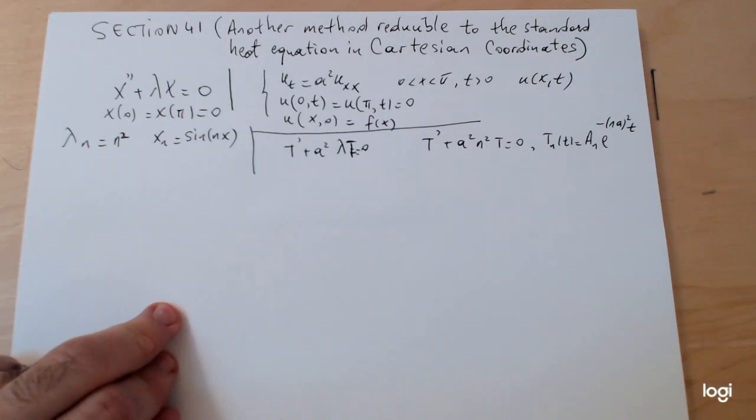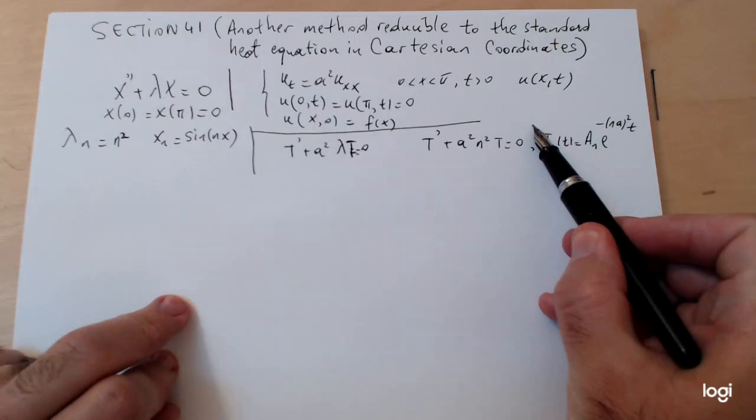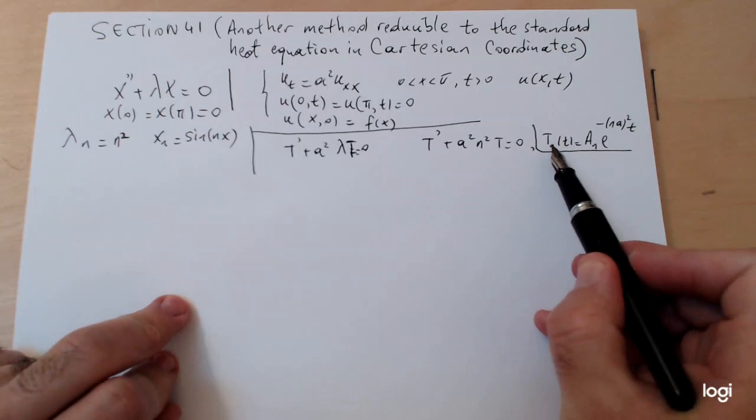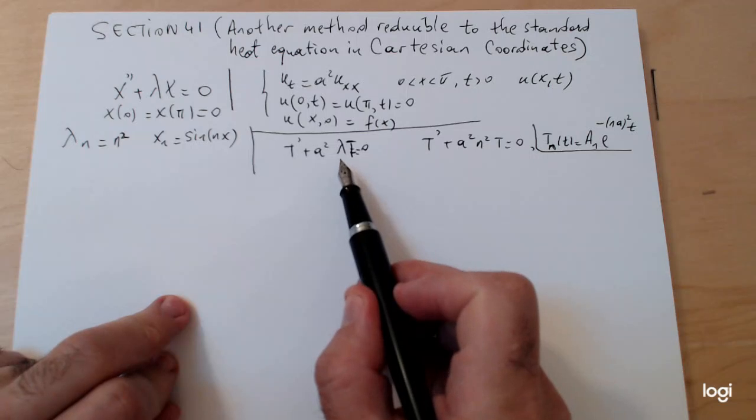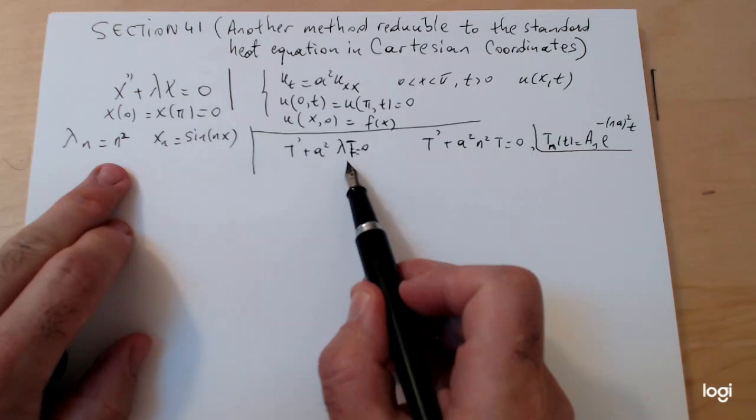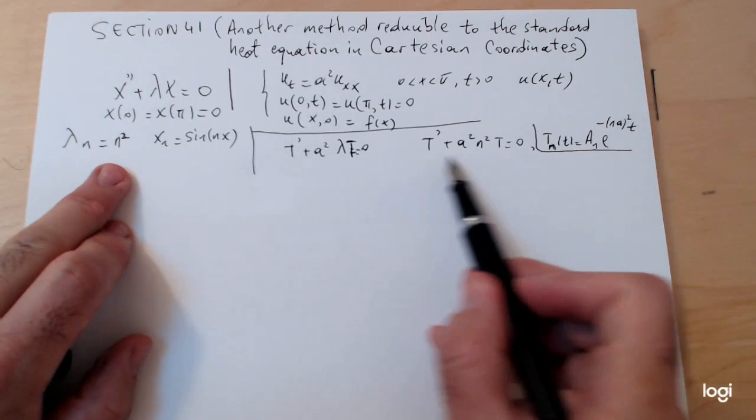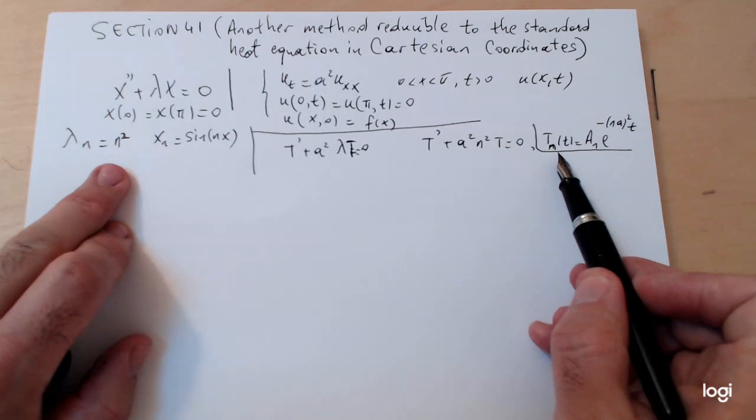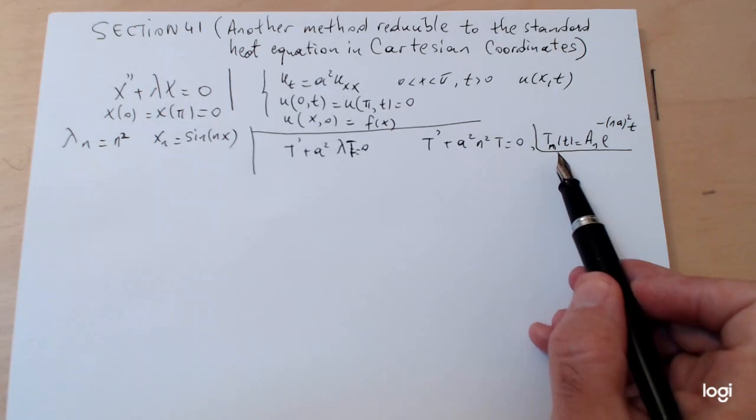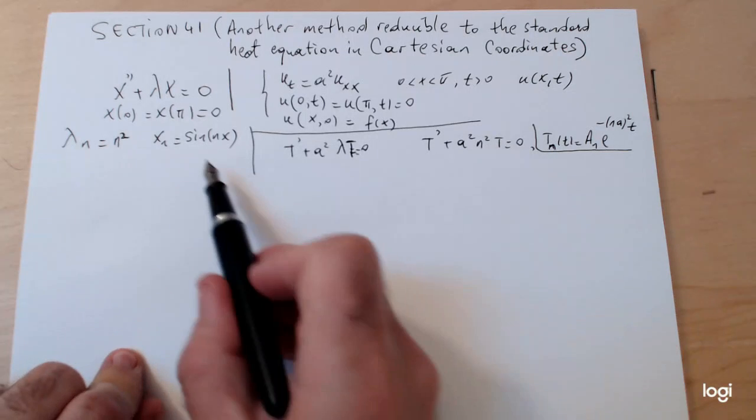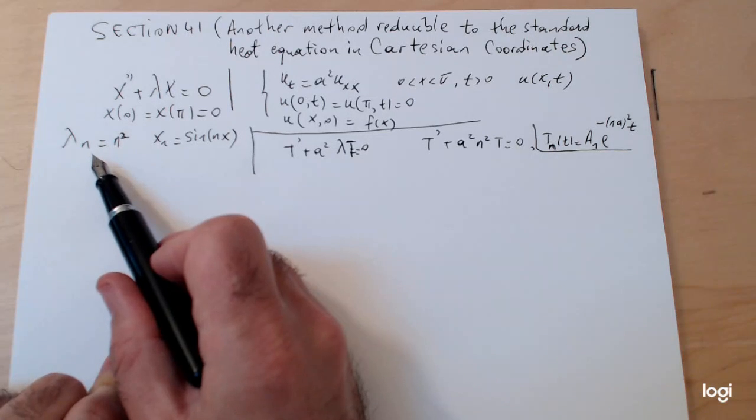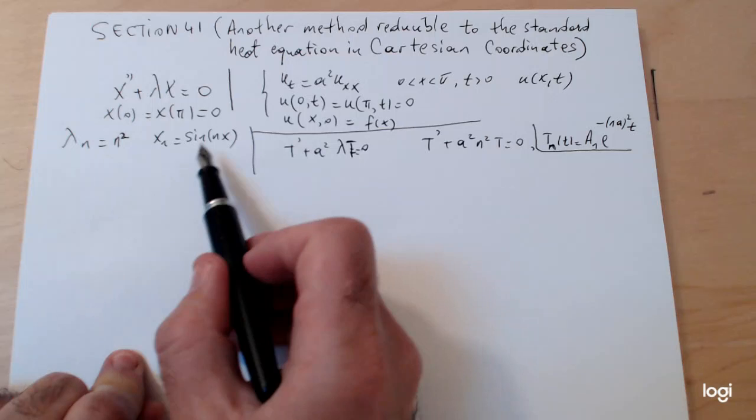This should be familiar to you. It's very important to keep in mind the conventions of notations here. Once you plug in the eigenvalue λ_n = n², then the solution will be labeled T_n as well, because you don't solve a single initial value problem, you solve an initial value problem for each of the eigenvalues that you found when you solve the Sturm-Liouville problem or eigenvalue problem.